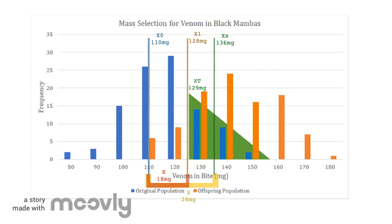These diminishing returns are likely the result of another trait that is being unknowingly selected for. For example, at some point in the experiments, the trait that determines how much venom a snake releases when they bite could become negatively associated with the trait determining the size of their venom glands. This relationship could result in higher amounts of venom released per bite, but less venom overall.